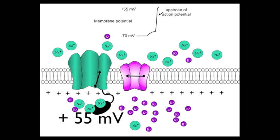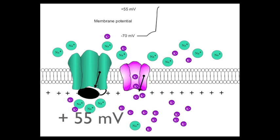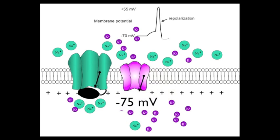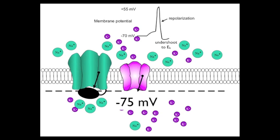The next thing that happens is that the inactivation gates close, and the activation gates on the potassium channels open. That gets rid of all the positive charges that have accumulated from sodium in the cell, and that's why the cell repolarizes very, very quickly. In fact, the repolarization drives the membrane potential to minus 75 millivolts, the potassium equilibrium potential, as indicated by the undershoot to EK in the membrane potential record.